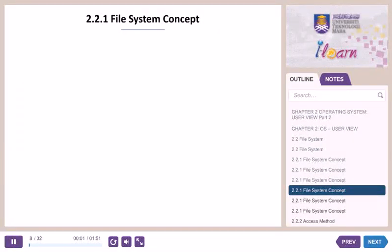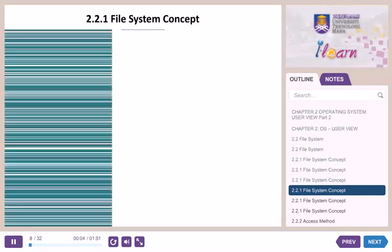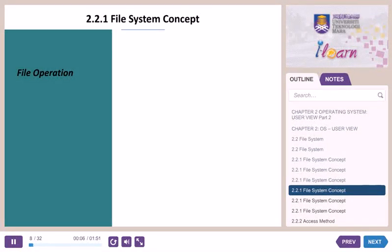File operations. There are six different operations that can be performed on a file. Creating a file: address space in the file system is required. After creating, an entry of the file is made in the directory. The directory entry records the name of the file and its location in the file system.